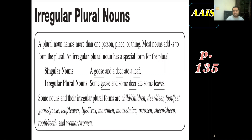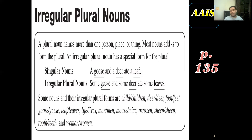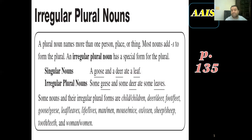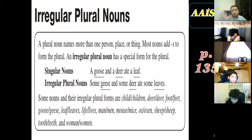For example: a goose, a deer, and a leaf. Each one is changed into plural differently — they don't take -s, -es, or -ies. 'Goose' changes to 'geese.' Don't ask why; there is no rule, it's irregular. 'Deer' stays the same: if you refer to one deer you say 'a deer,' and if you refer to more than one you still say 'deer.'